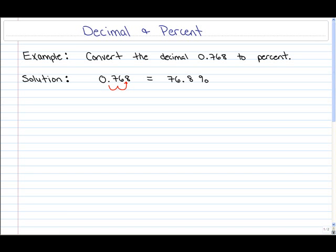So our answer here is 76.8%. Or you can actually take the 0.768 and simply multiply it by 100. And that would give you the exact same answer of 76.8. And again throw on the percent sign to tell the reader that this is per 100.